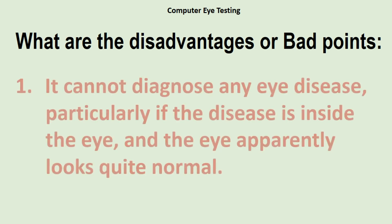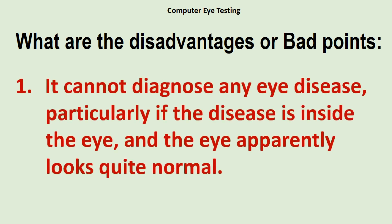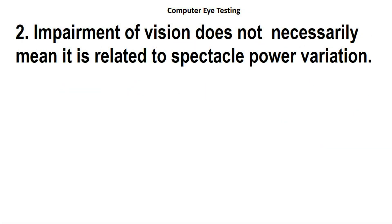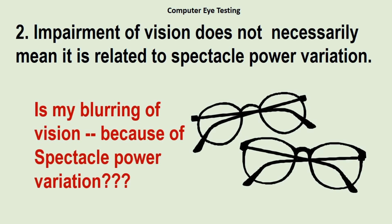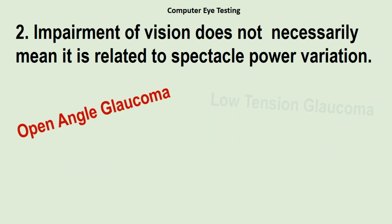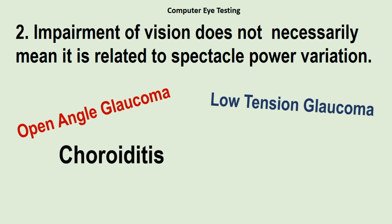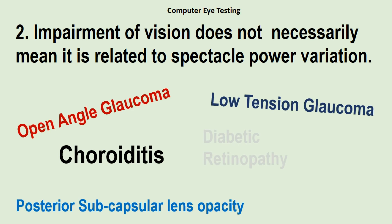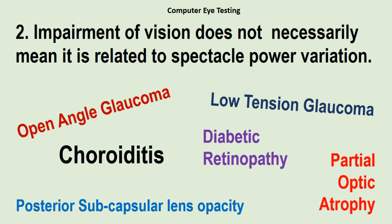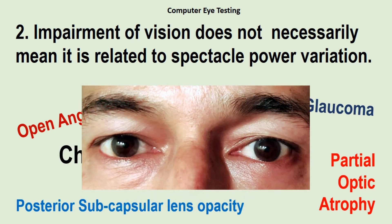Now the disadvantages. Number one: it cannot diagnose any eye disease, particularly if the disease is inside the eye and the eye apparently looks quite normal. Number two: impairment of vision does not necessarily mean it's related to spectacle power variation. There are many eye conditions in which eyes look apparently normal from outside, but inside there are problematic diseases such as open angle glaucoma, low tension glaucoma, patches of choroiditis, posterior subcapsular lens opacity, diabetic retinopathy, partial optic atrophy, and many others.